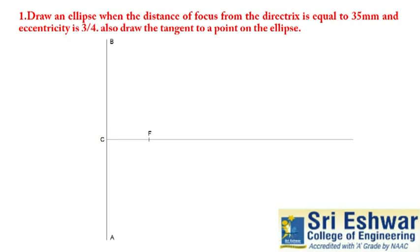Now this 3 by 4, this is the fraction. 3 plus 4 is 7. Now divide this C and F, distance between C and F into 7 equal parts like this.